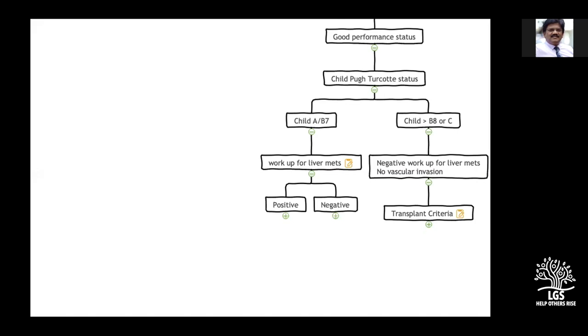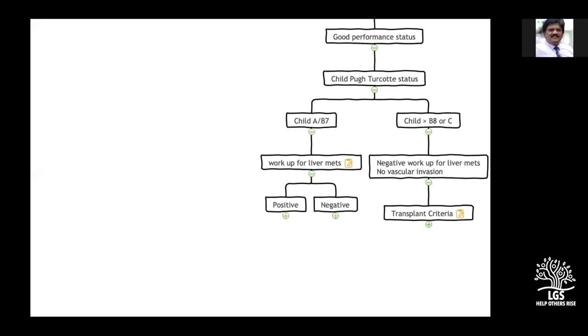From the chat: Raghavendra Gupta asks — are MELD exception points limited to Milan criteria only and not UCSF? In the West, predominantly deceased donor transplants are used. Because HCC patients have low MELD scores, they receive MELD exception points based on Milan criteria to get allocation. In India and the East, we predominantly have living donors, so we use the broader UCSF criteria.